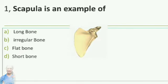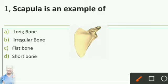Scapula is an example of: option A long bone, option B irregular bone, option C flat bone, option D short bone. The answer is option B, irregular bone.